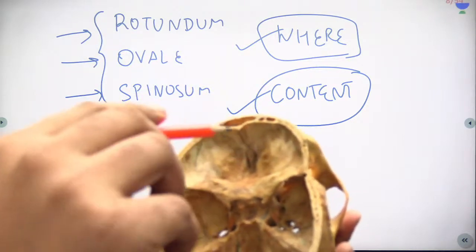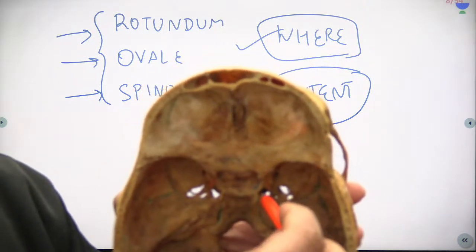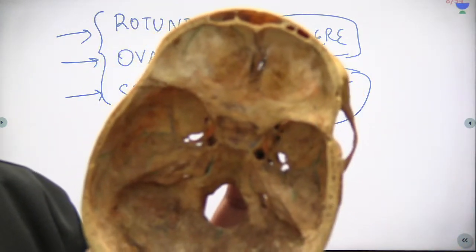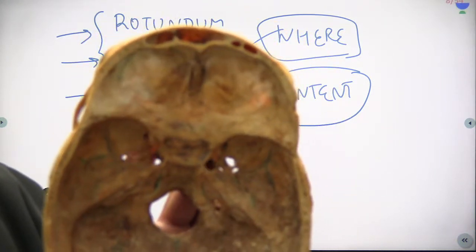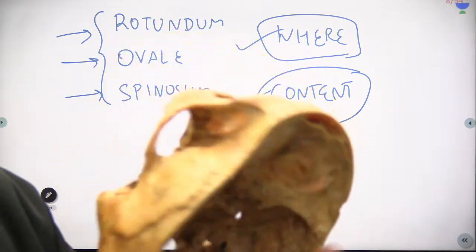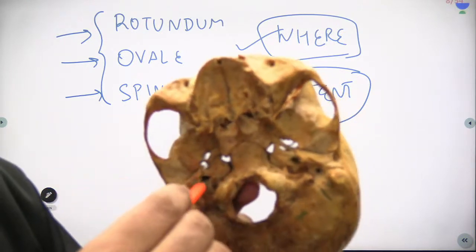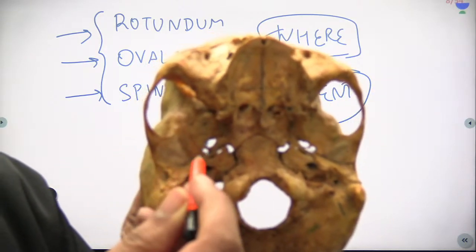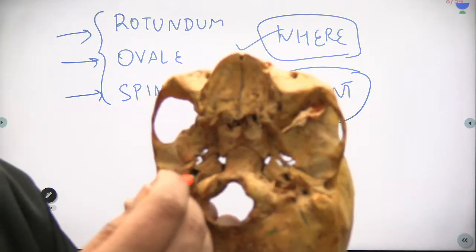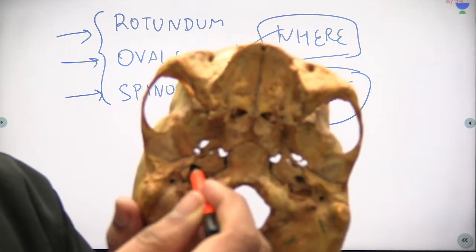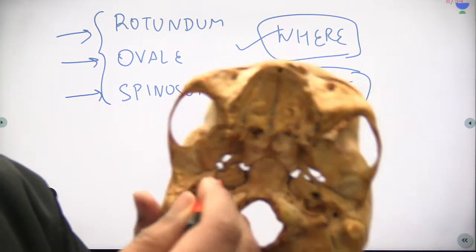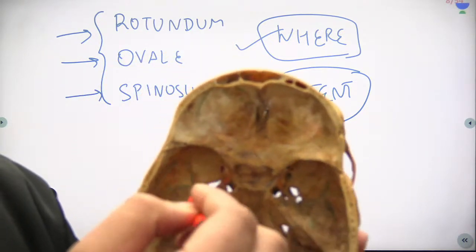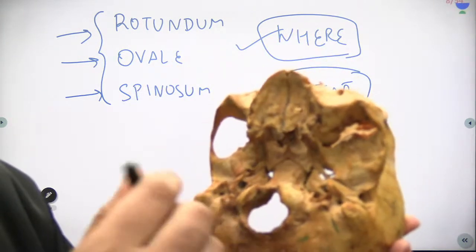Apart from the cranial nerves, look at the foramen lacerum. You can see the white background behind it, but in life its base is filled by cartilage. Then there is the carotid canal — how to recognize it: you can see the ovale and spinosum, and just behind the spinosum in the petrous part you have the carotid canal. The internal carotid artery goes inside the petrous temporal bone through the carotid canal and then comes out into the foramen lacerum and through the cavernous sinus.